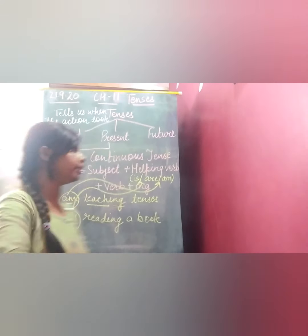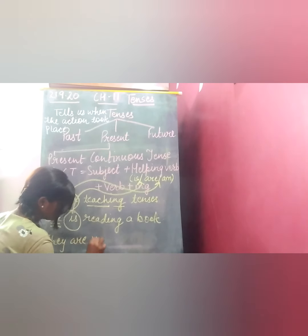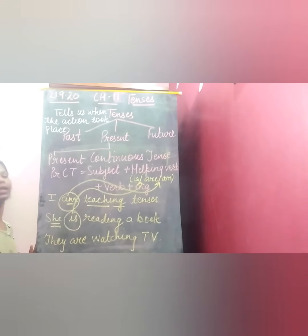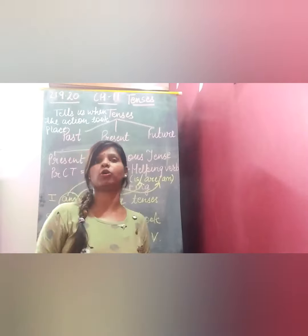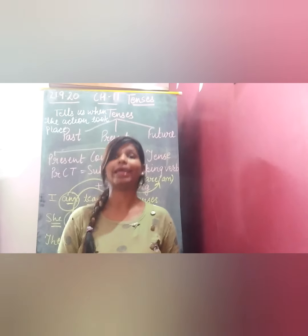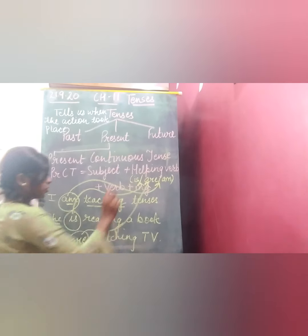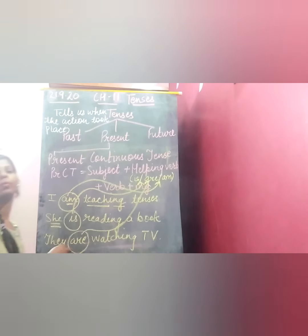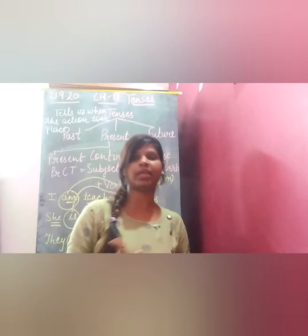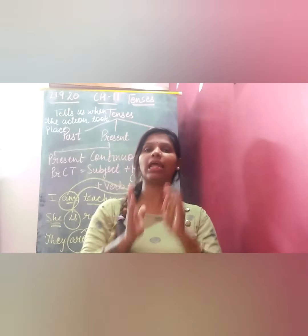Now see another example: 'They are watching TV.' What are they doing? Many people are watching TV. Here, 'they' is your subject, and 'they' is plural — many people. That is why we have used the helping verb 'are'. So: they + are + watch + ing + remaining sentence. Understood?